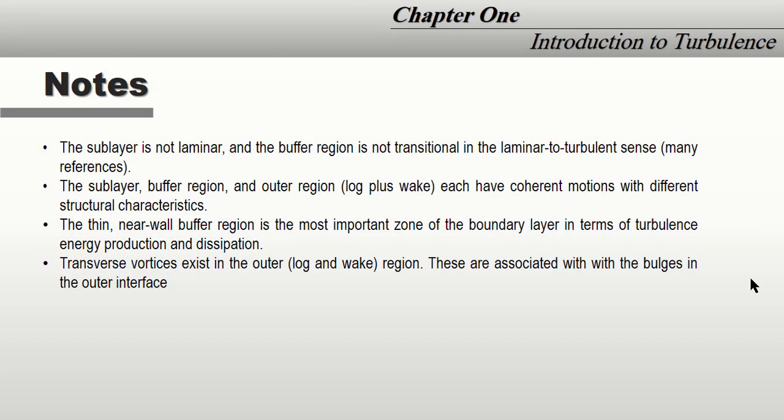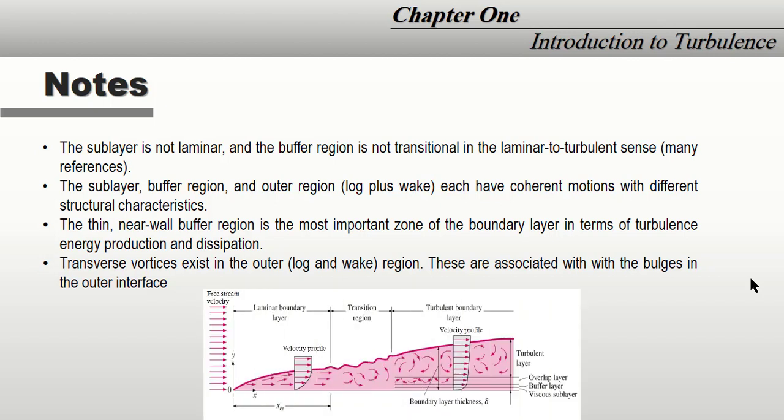Some important notes about the subject: As we mentioned before, the turbulent boundary region consists of three general layers—sublayer, buffer, and logarithmic. The sublayer, which is the first one adjacent to the wall, is a low-velocity region, but it is not laminar flow. The buffer layer is not a transition region. Each of these layers has coherent structures and eddies. Most turbulence production is generated in the buffer layer, where ejection of low-speed fluid and sweep of high-speed fluid occur throughout this layer.